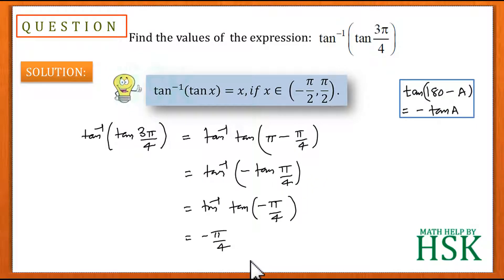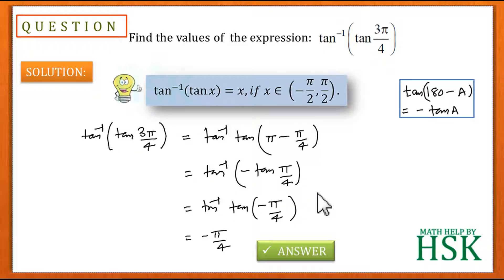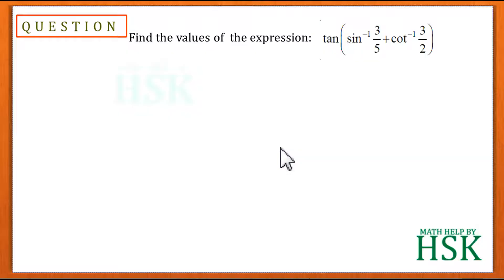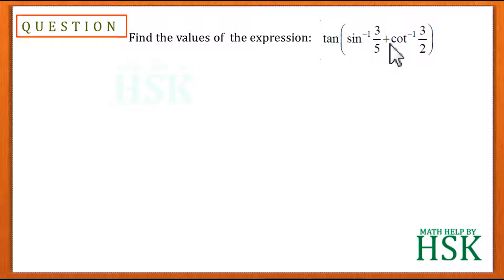Taking question number 18 of exercise 2.2 of inverse trigonometric functions. We have to find the value of the expression tan(sin⁻¹(3/5) + cot⁻¹(3/2)).